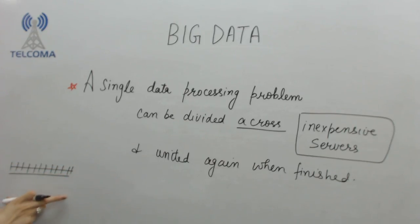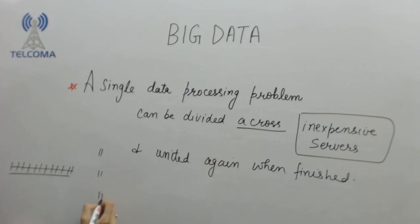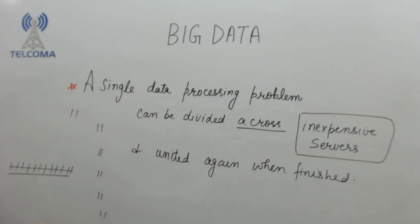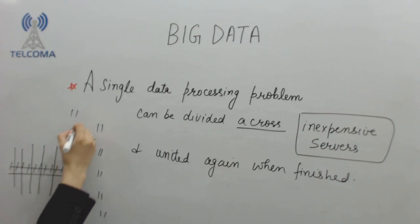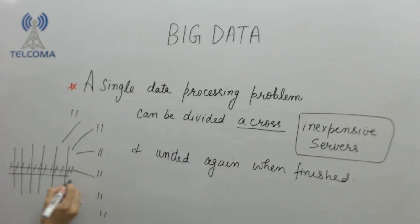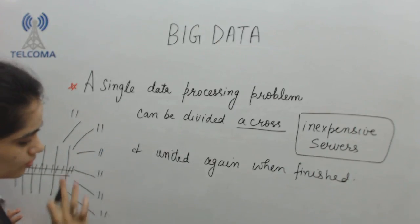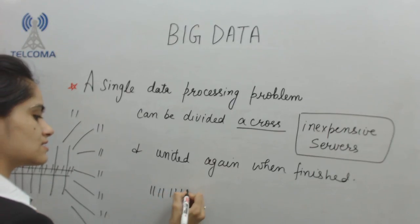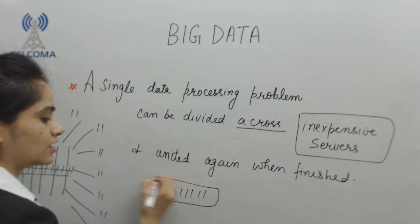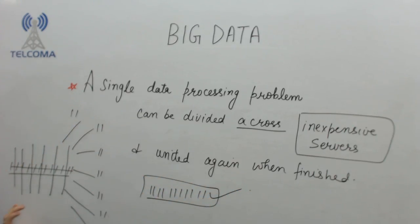For example, I have a big problem and I divide it, distributing it to multiple servers. Each server processes its part individually, and after all the processing is done, I unite the results again because the work is finished.